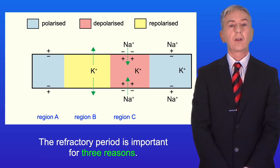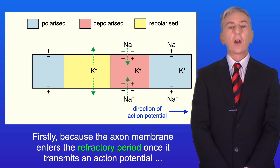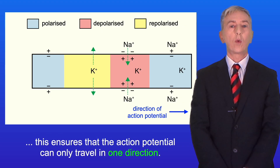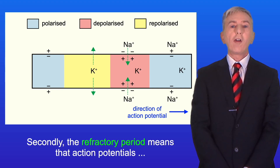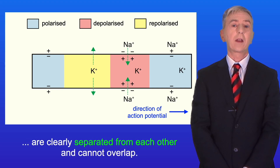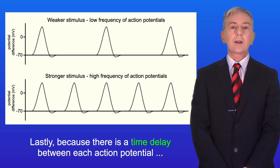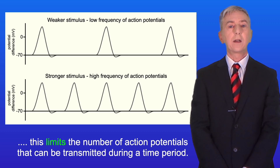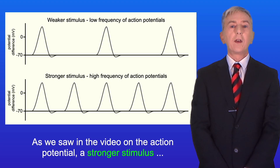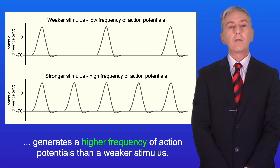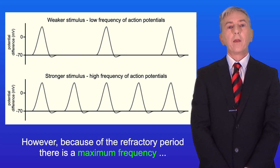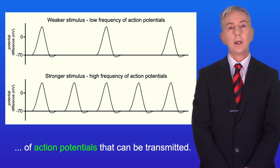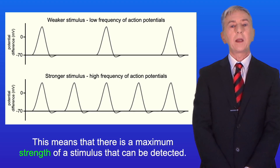The refractory period is important for three reasons. Firstly, because the axon membrane enters the refractory period once it transmits an action potential, this ensures that the action potential can only travel in one direction. Secondly, the refractory period means that action potentials are clearly separated from each other and cannot overlap. And lastly, because there's a time delay between each action potential, this limits the number of action potentials that can be transmitted during a time period. As we saw in the video on the action potential, a stronger stimulus generates a higher frequency of action potentials than a weaker stimulus. However, because of the refractory period there's a maximum frequency of action potentials that can be transmitted, and this means that there's a maximum strength of a stimulus that can be detected.